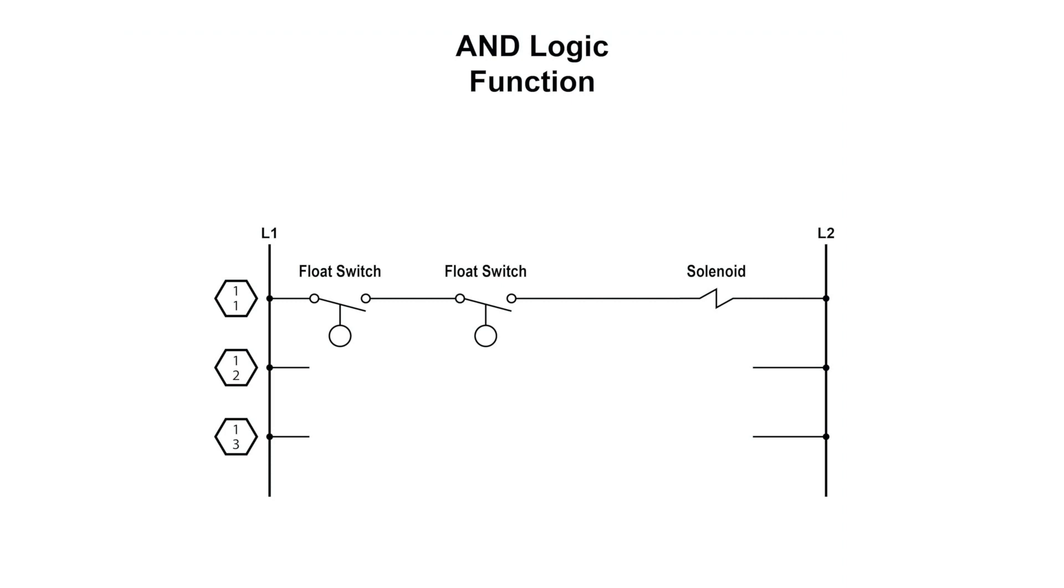The AND logic function operates like a series circuit. They are used when two or more inputs are connected in series and they all must be closed in order to energize the output. The example shows two float switches in series. Both the float switches must be closed before energizing the solenoid and performing an action such as allowing water or some type of substance to flow.